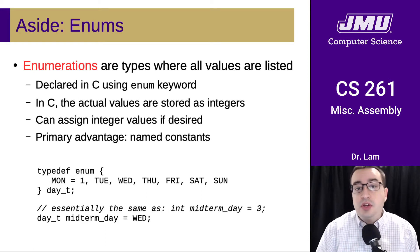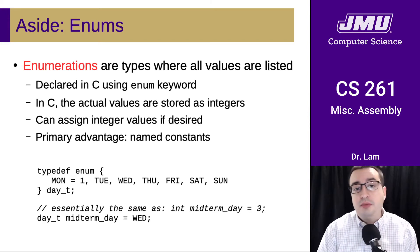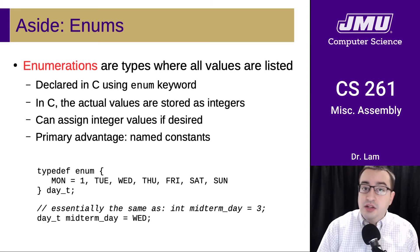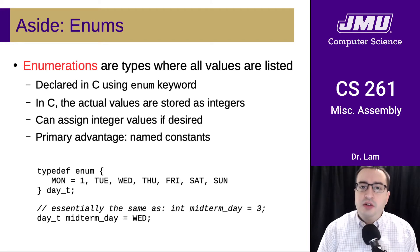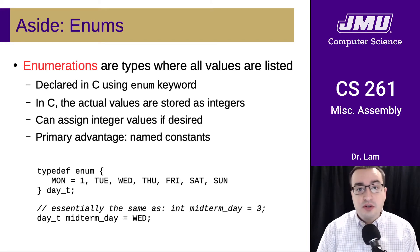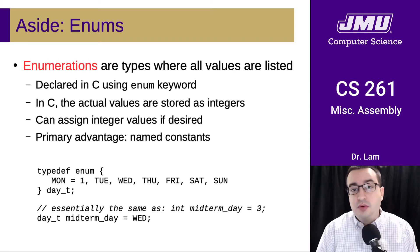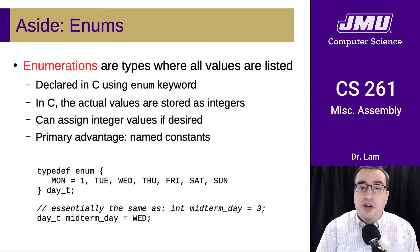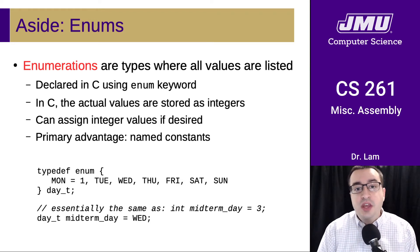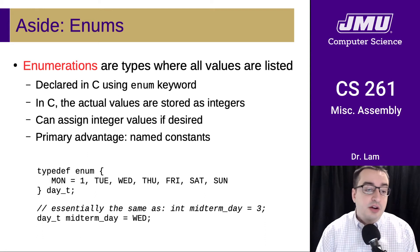We'll use these in projects 2 and beyond. They're declared in C using the enum keyword. In C, the actual values are stored as integers, and so in assembly you would just reference all the values using those raw integers. You can actually assign integer values if desired.